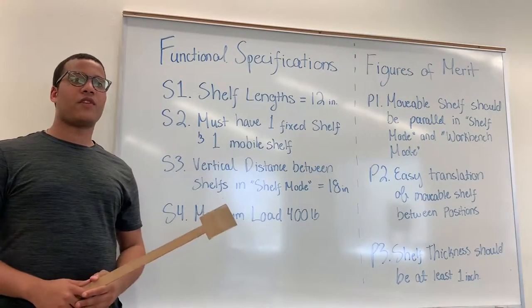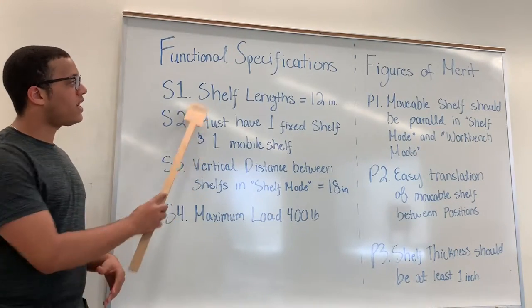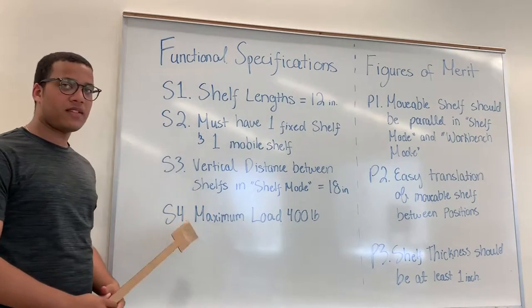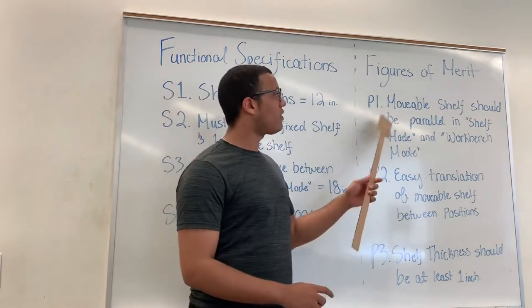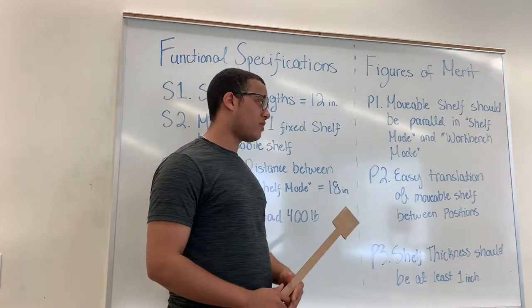Hi, my name is Julian and I'll be going over the functional specifications and Figures of Merit. The most important functional specifications is S1, that we have a shelf length of 12 inches, and that the maximum load capacity is 40 pounds. In Figures of Merit, we want to have our shelves movable in 2-mode, shelf mode and workbench mode.